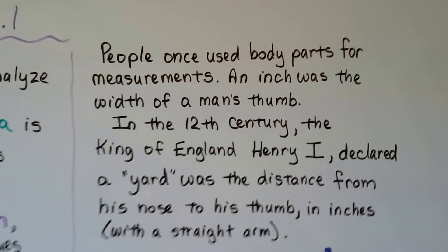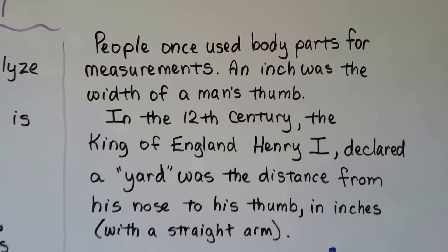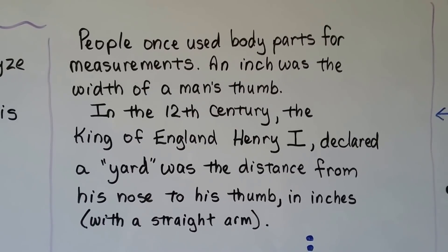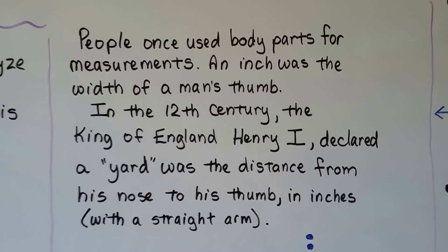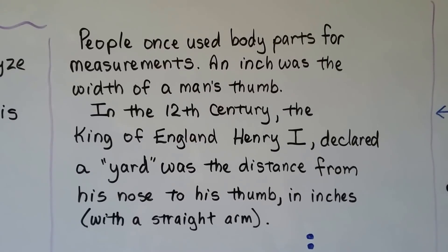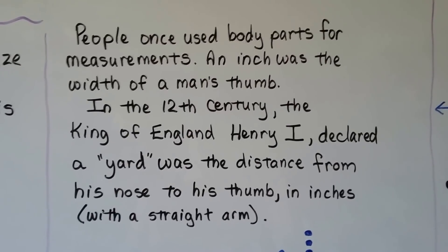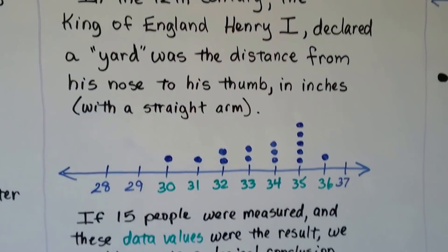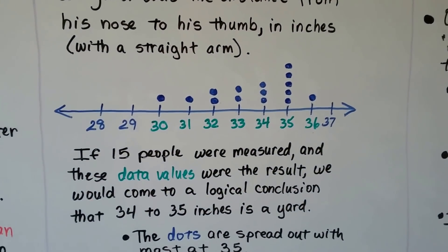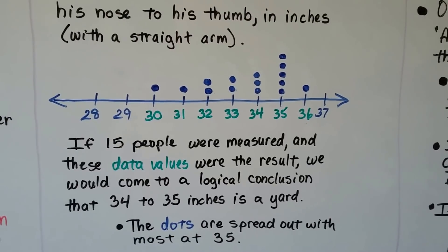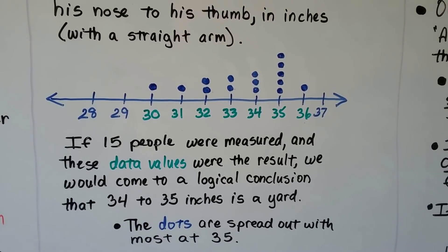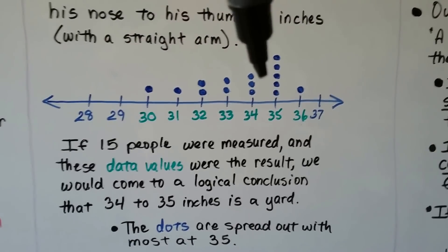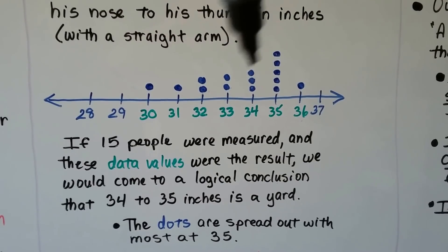Here's our first example. People once used body parts for measurements. An inch was the width of a man's thumb. In the 12th century, the King of England, Henry I, declared a yard was the distance from his nose to his thumb in inches on the straight arm. If 15 people were measured and these data values were the result, we would come to the logical conclusion that 34 to 35 inches is a yard.